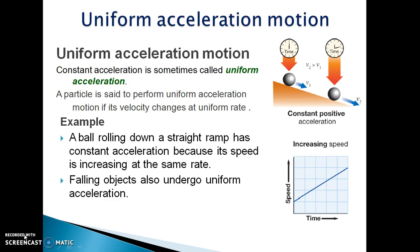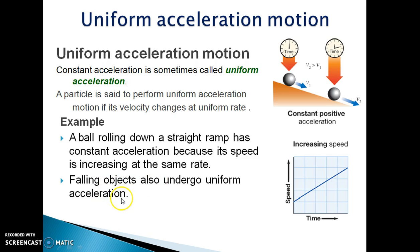What is uniform acceleration motion? Constant acceleration is sometimes called uniform acceleration. A particle is said to perform uniform acceleration motion if its velocity changes at a uniform rate. For example, a ball rolling down a straight run has constant acceleration because its speed is increasing at the same rate. A second example is of falling objects, which also undergo uniform acceleration.